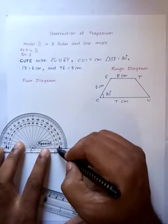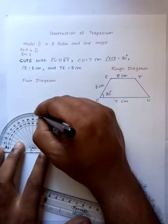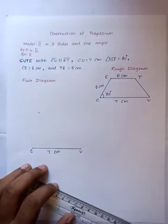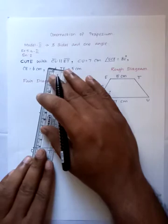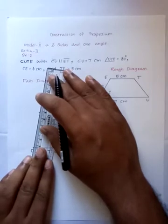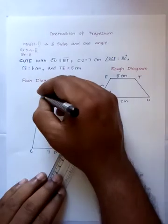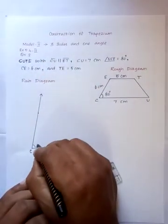So zero, how much? 90 degree, 60, 70, that is 80 degree. So 80 degree, point marked, line segment drawn. Line M extended. Angle 80 degrees.